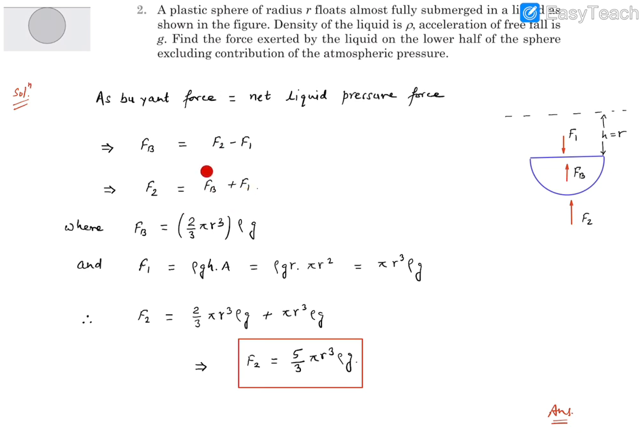We are interested in F2, so F2 is going to be the buoyancy force plus F1. We know the buoyancy force is equal to the volume submerged. Volume displaced is going to be 2/3 π r³, that means the volume of this hemisphere, into density of liquid rho, into gravity g.